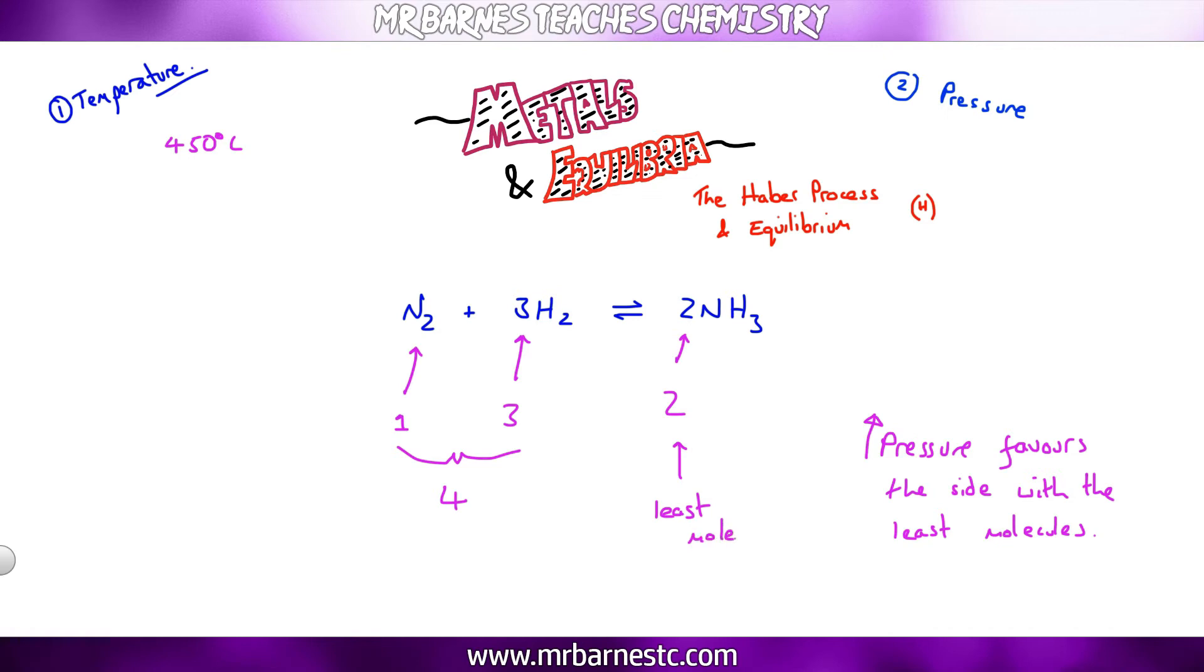So my least molecules is on the right. So if I increase the pressure I will have equilibrium shifting to the right and therefore I'm going to have more ammonia. So that's a good thing.